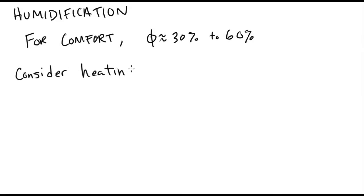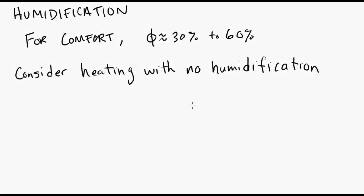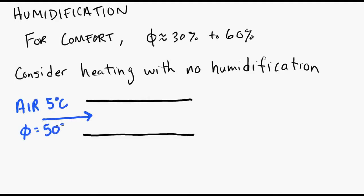So if we first consider heating without any humidification, we'll draw out a simple heater. Here's a duct here with air going into it at 5 degrees Celsius with a relative humidity of 50 percent. We'll throw some heating coils into this duct and heat the air to 25 degrees Celsius. We want to know what that relative humidity is.